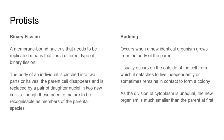With budding in protists, new identical organisms grow from the body of the parent. It's usually on the outside of the cell, and then it can detach and live independently, or sometimes remain in contact which allows it to form a colony of cells. Usually the daughter organism is much smaller than the parent at first due to the unequal division of cytoplasm.